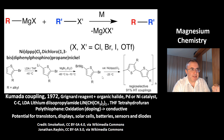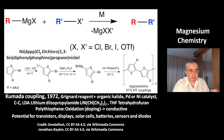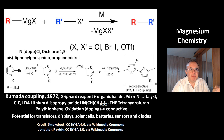The trick in the Kumada coupling is the catalyst — nickel-DPPP chloride, that's dichloro-1,3-bis(diphenylphosphinopropyl)nickel. Again you have to work at low temperatures. And the product is polythiophene.